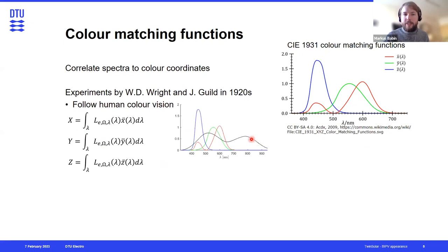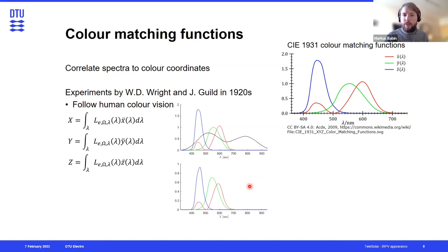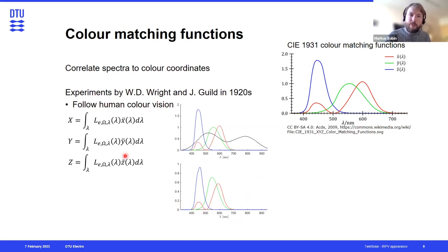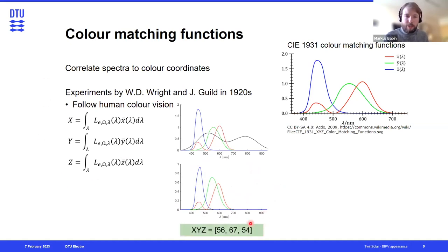If we measure a certain spectrum of an object and multiply it by the three color matching functions, we end up with three slightly different functions. Then if we integrate each one over the full wavelength range, we arrive at three color coordinates: X, Y, and Z. Each of these is associated with a certain color — for example, this shade of green has the color coordinates 56, 67, 54.